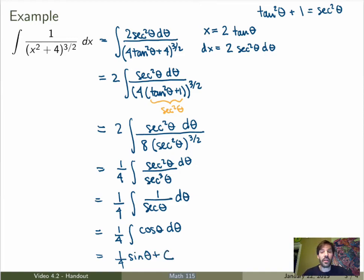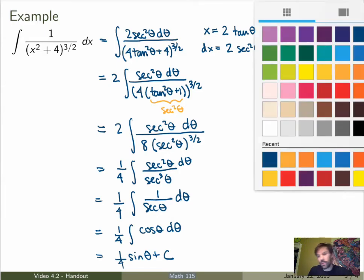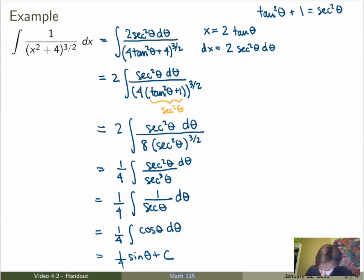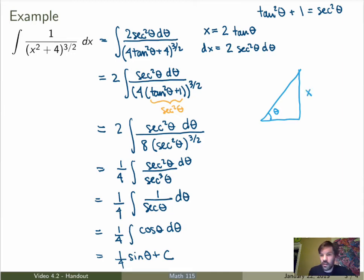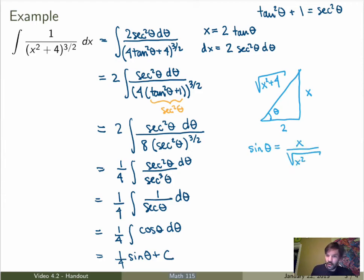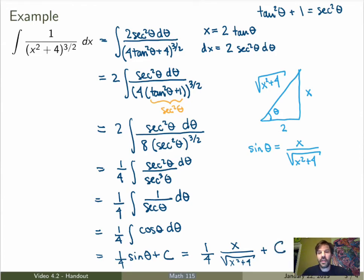Now I need to rewrite everything in terms of x. Rather than just using θ = arctan(x/2), which would give a mess, the best approach is to use a right triangle. Setting θ in the triangle with tanθ = x/2, the opposite side has length x and the adjacent side has length 2, giving a hypotenuse of √(x² + 4). From this, sinθ = x / √(x² + 4). Substituting back gives the final answer: (1/4) · x / √(x² + 4) plus a constant.